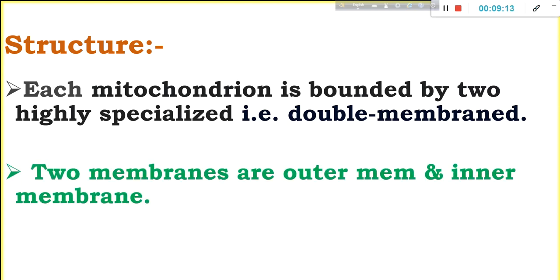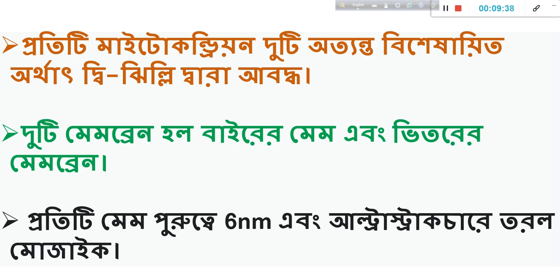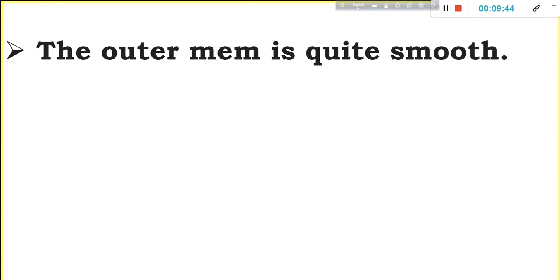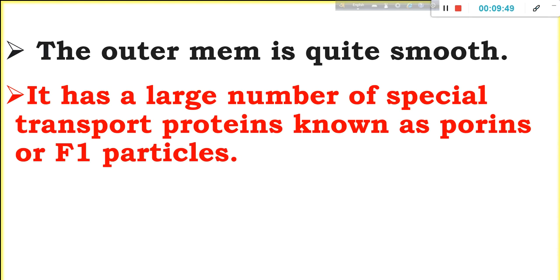The two membranes are the outer membrane and the inner membrane. The outer membrane is 6 nanometers in thickness and is quite smooth, with a fluid mosaic ultrastructure.